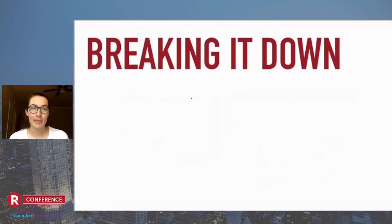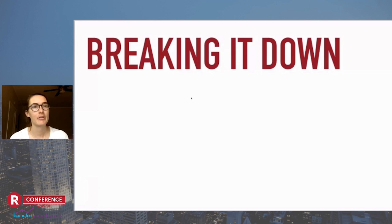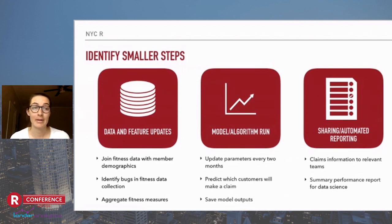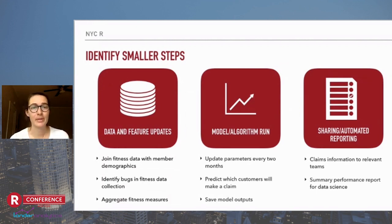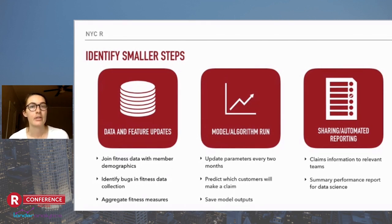Now let's talk about what I call breaking it down: how you take what you've made for that proof of concept, which can be a ton of different code across different notebooks and scripts all over the place, and think about breaking that down into more digestible pieces to turn into production code. I always start by identifying smaller steps. Here are three buckets I consider for every single data science project. These buckets can have smaller groups within them, and every project might not fit perfectly — you might need to add your own. The idea is to sort the code you've already written into each bucket.